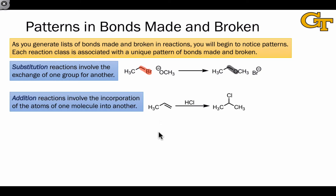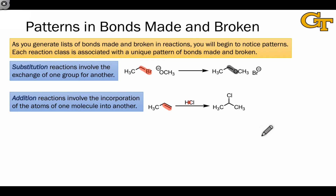Addition reactions involve the incorporation of the atoms of one molecule into another. This typically involves a cycling of bonds, meaning there are two bonds broken in the starting materials — here the HCl bond and the pi bond are both broken — and two new bonds are formed so that the substrate and reagent become fully linked. Here there's a new bond between carbon and chlorine that's formed, and a new carbon–hydrogen bond that's formed.